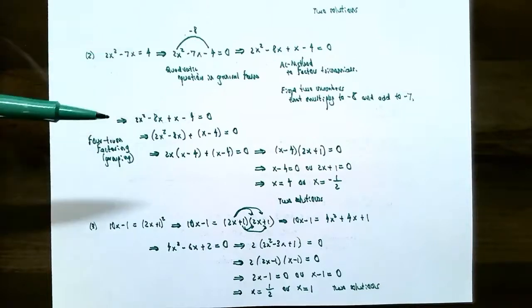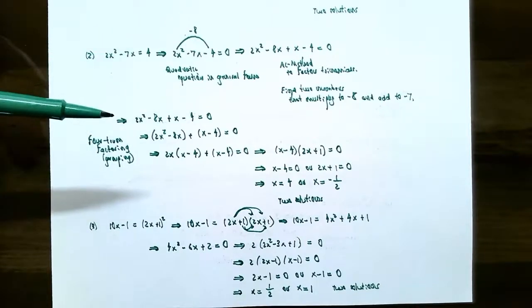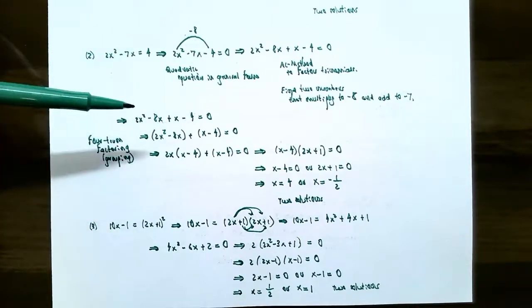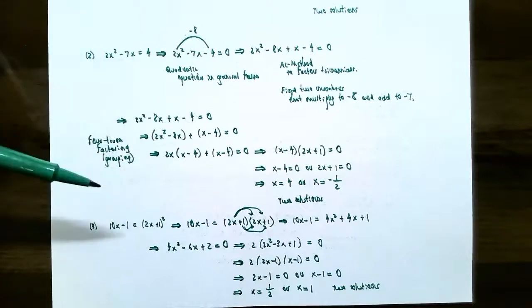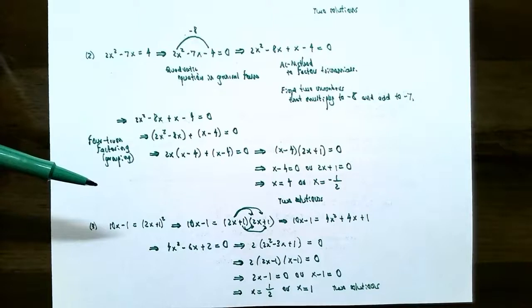In these three examples we've covered factor by grouping, the AC method, factoring trinomials, and factoring by GCF. If you have any questions about factoring or the examples in this video, or questions while working on the homework, please let me know. I'll see you in the next video when we talk about solving quadratic equations using the square root property and completing the square.